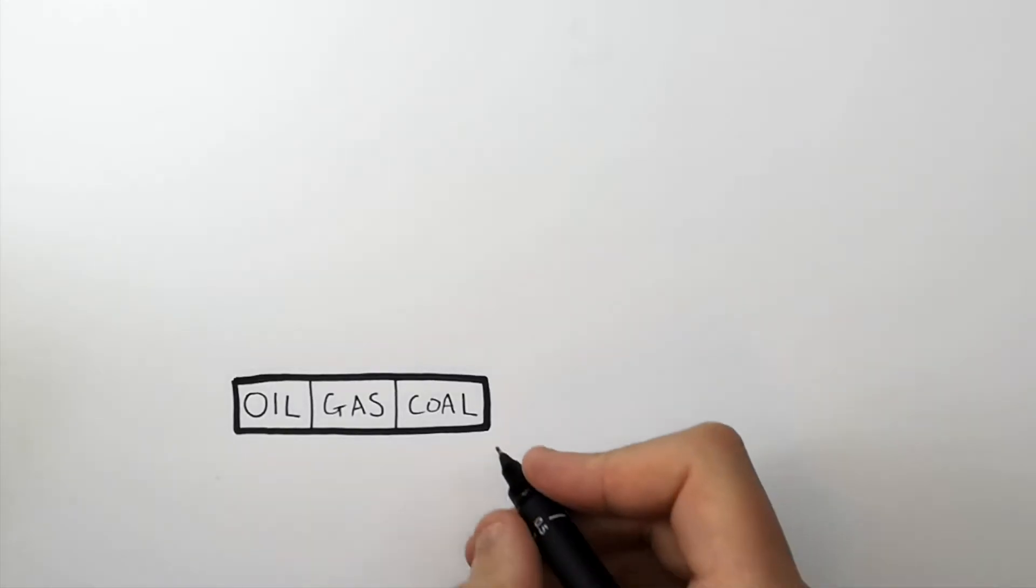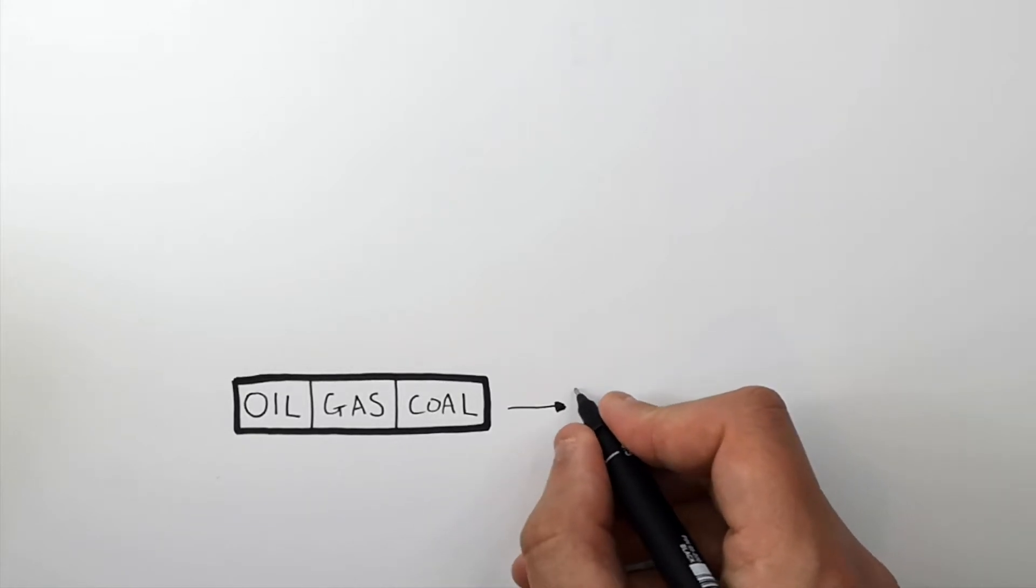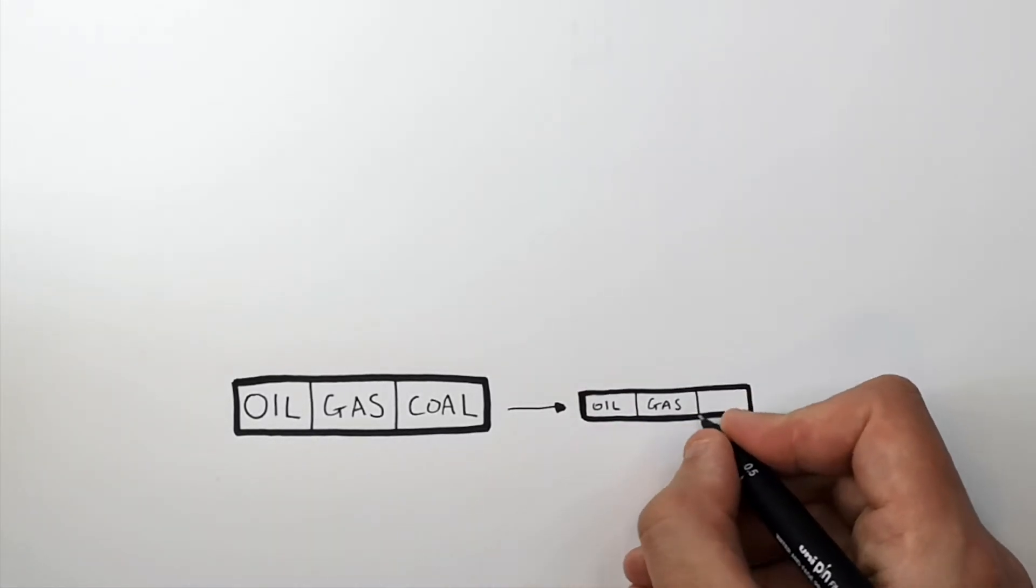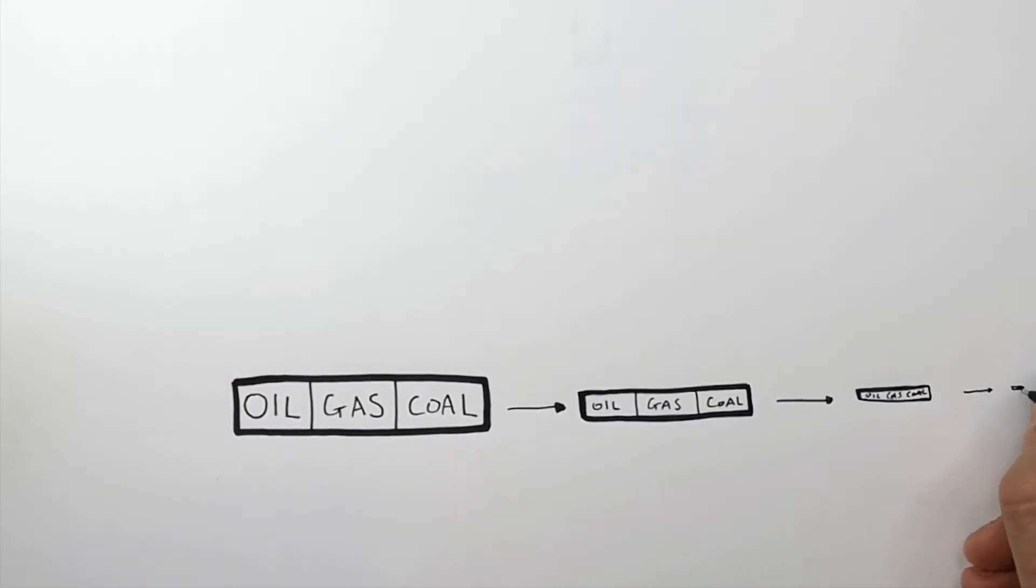One of the main concerns of the use of fossil fuels is that they're eventually going to run out. Oil, gas and coal are non-renewable. They will run out eventually. As you can see here, supply of oil, gas and coal decreases over time until the oil, gas and coal supplies will run out.